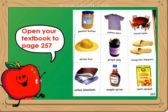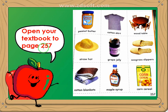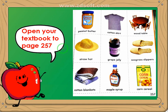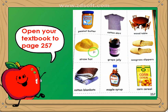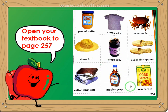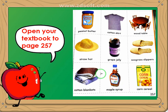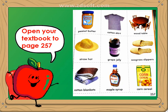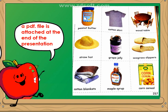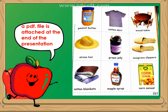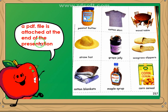Now, the first thing that you're going to do is to open your book to page 257. On page 257, you will see this page with the pictures of the different products coming from different natural resources. Now, don't worry if you cannot find this page — a PDF file is attached at the end of this presentation.